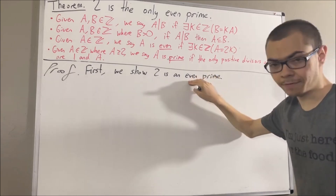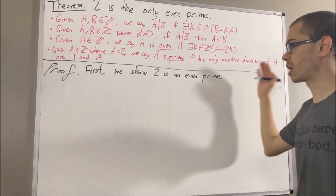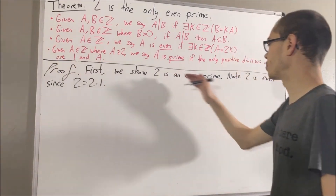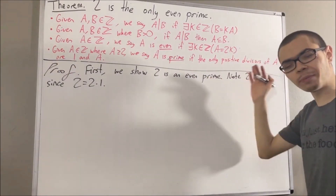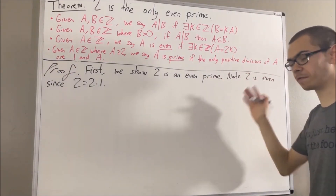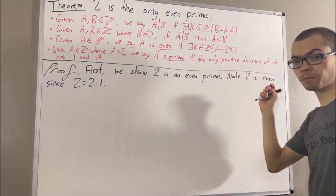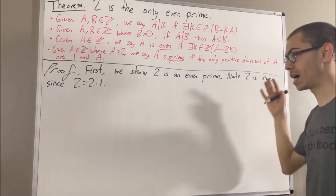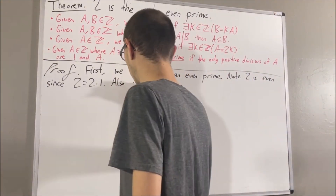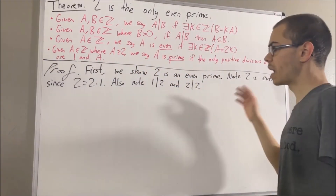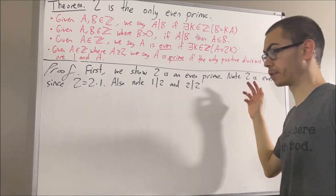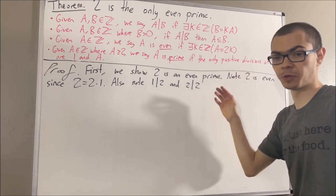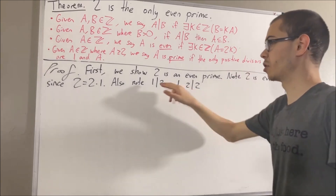Well, we know that 2 is even because 2 is equal to 2 times 1. And to show that 2 is prime, we want to show that the only positive divisors of 2 are 1 and 2. We know that 1 and 2 are positive divisors of 2. And to show that 1 and 2 are the only positive divisors of 2, we're going to give ourselves an arbitrary positive divisor of 2 and show that it must be equal to either 1 or 2.